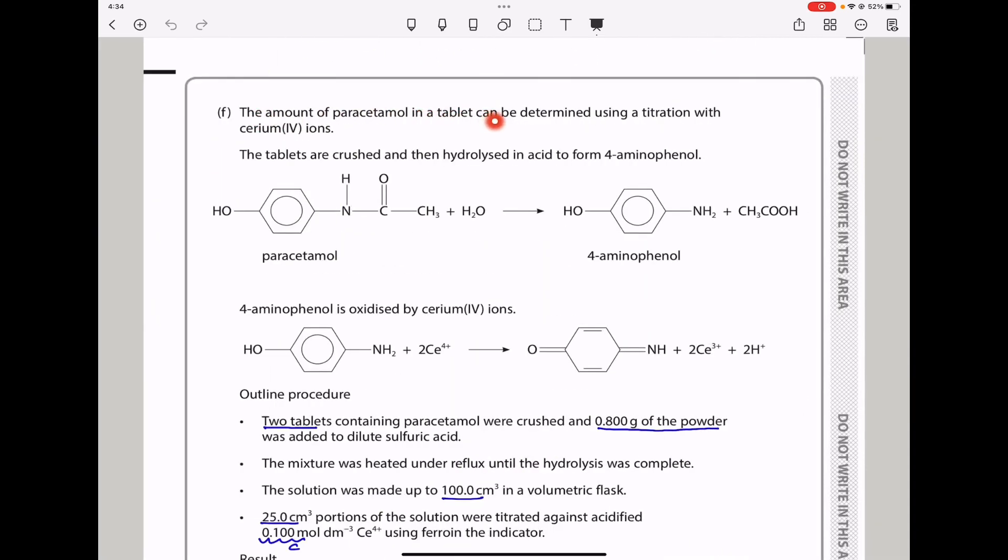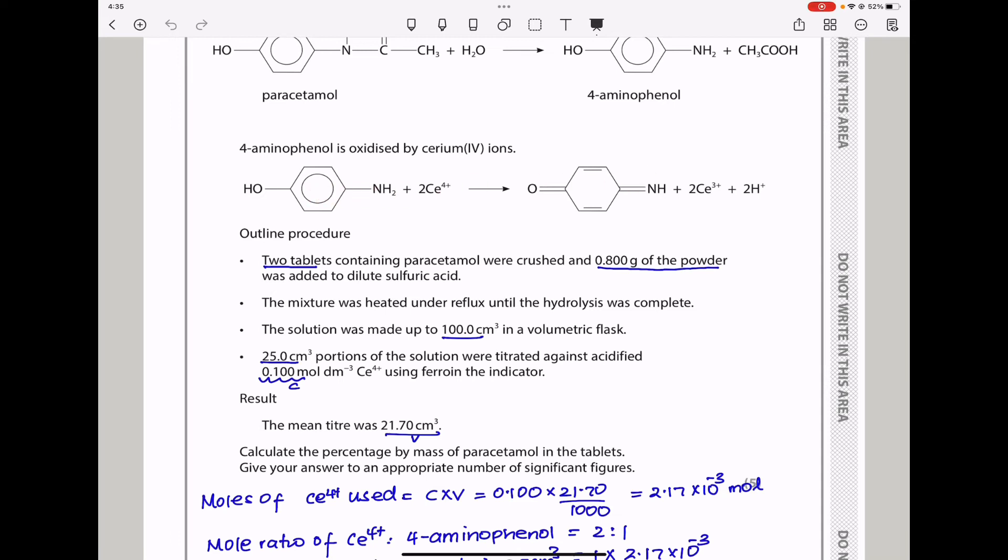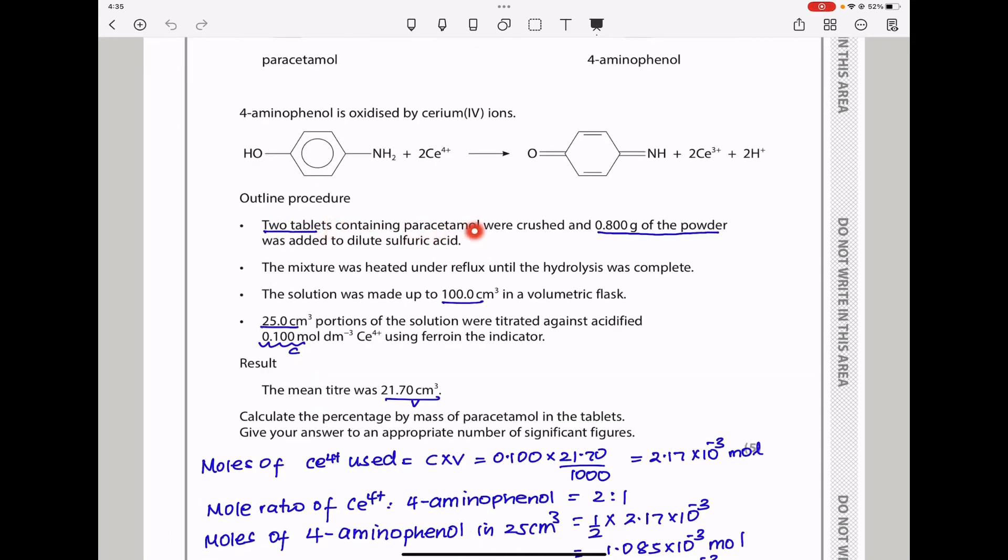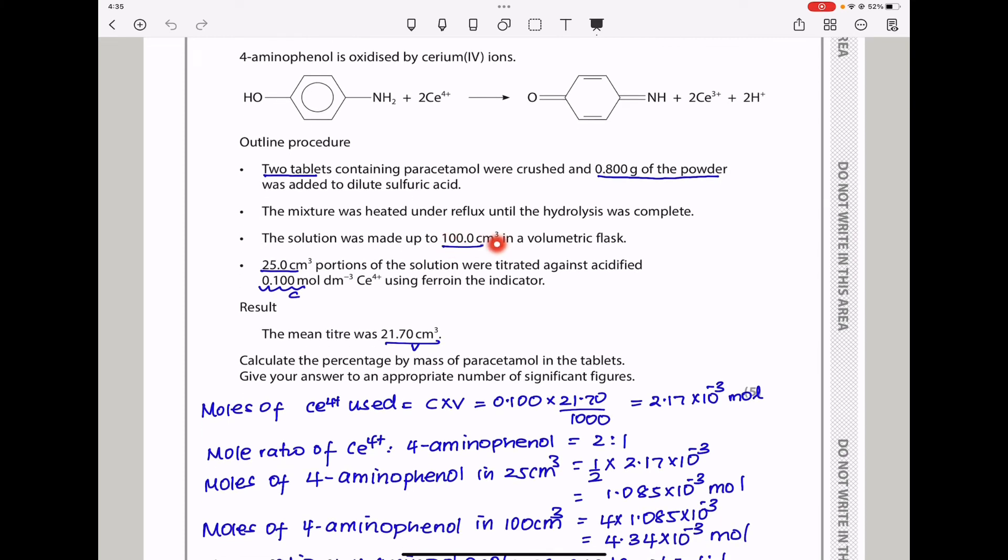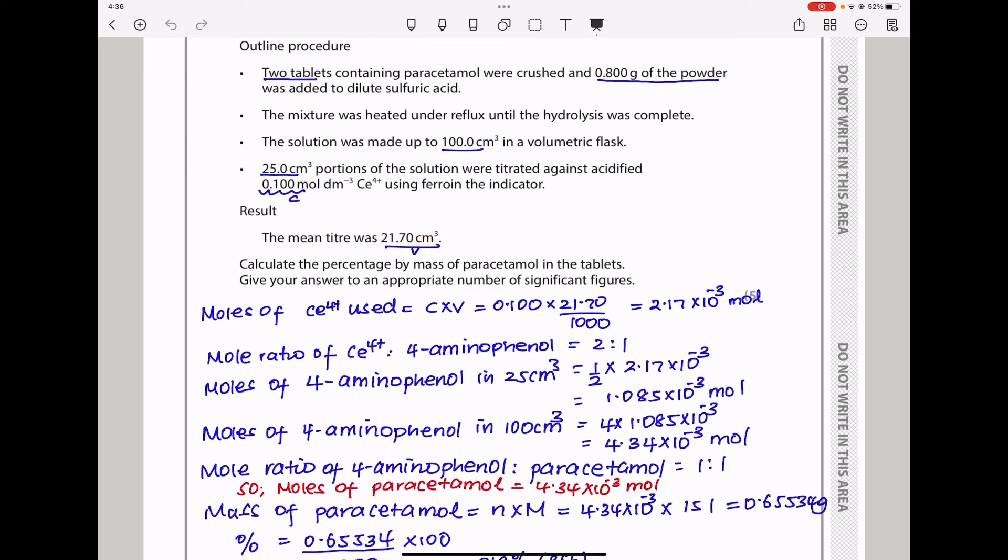Moving on. Here they say the amount of paracetamol in a tablet can be determined. In acid to form 4-aminophenol, so this is paracetamol and that is 4-aminophenol. 4-aminophenol is oxidized by cerium 4 ions. We can see this is the reaction. The outline procedure is as below. The two tablets containing paracetamol were crushed and 0.8 grams of the powder was added to the sulfuric acid. The mixture was heated and refluxed until the hydrolysis was complete. 25 centimeters cubed portions of the solution were titrated against acidified 0.100 mol per decimeters cubed of cerium 4-plus.